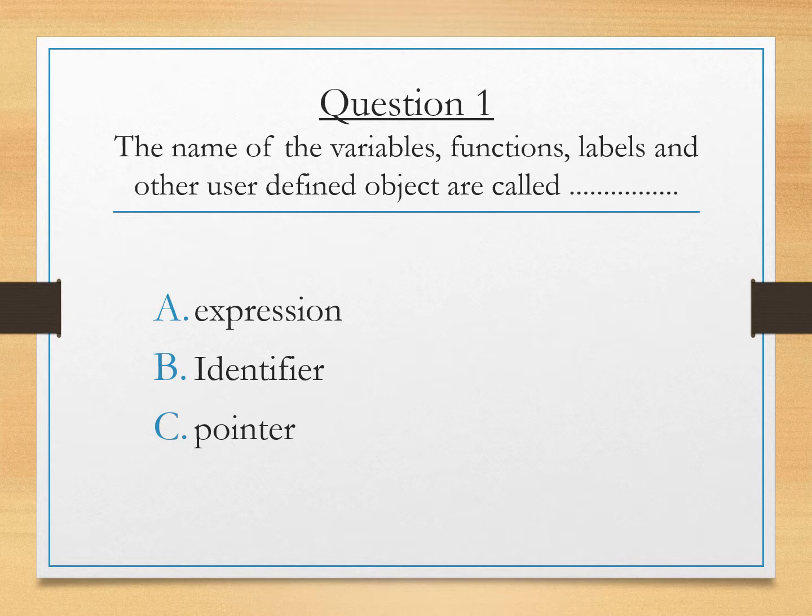Expression is not a single variable. It's a set of variables. Identifier is the name of a variable or a function or a label that we are talking about. And Pointer is an address. It's a variable that stores the address. So it's not a variable name. So the answer is B. Identifier.